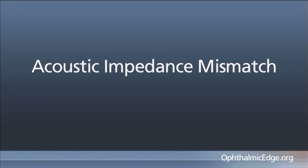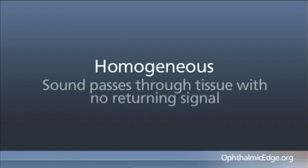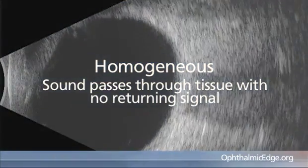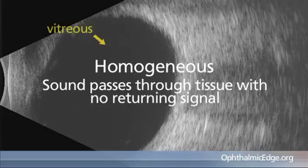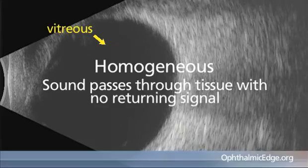The next words are descriptions of acoustic impedance mismatch — homogeneous and heterogeneous. Once sound gets into a tissue, it will either pass freely through it if it has all the same acoustic impedance, or there will be levels of differences in acoustic impedance. If it passes through with no signal coming back, it is considered homogeneous. For the most part, the vitreous is like that, which is why the vitreous appears darkened, except for a few reflections from collagen.